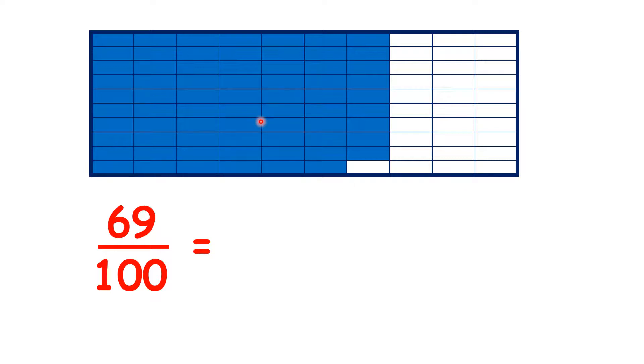And there are 69 parts of the big rectangle which are shaded blue, so we can say that the fraction of the big rectangle which is shaded is 69 hundredths, because we have 69 parts out of 100.